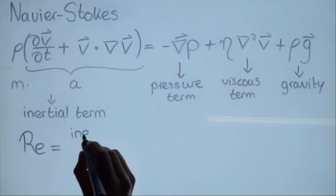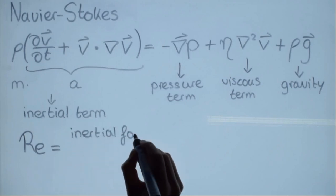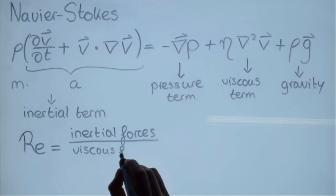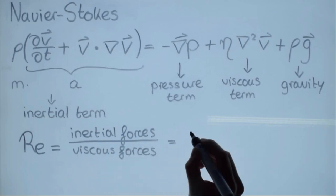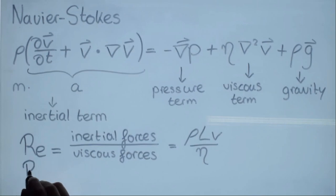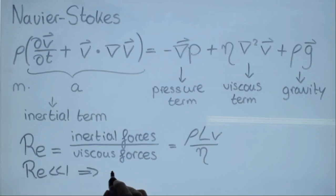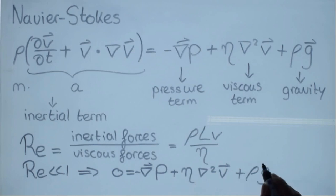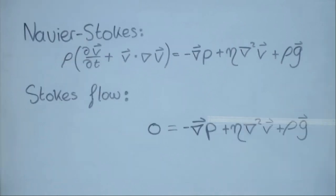One of these conditions is in the situation of a low Reynolds number. The Reynolds number is a dimensionless number defined as the inertial forces divided by the viscous forces. In viscous fluids, such as silicon oil, the viscous forces are very large, so the Reynolds number is very low, and thus the Navier-Stokes equation can be simplified. We see that the left-hand side becomes insignificant compared to the right-hand side — the inertial forces are much smaller than the viscous forces. What remains is called the Stokes flow.